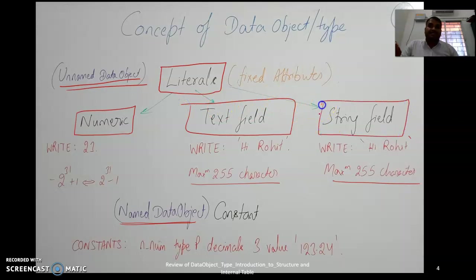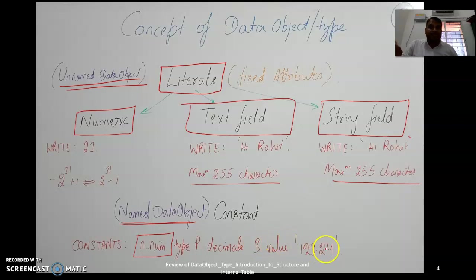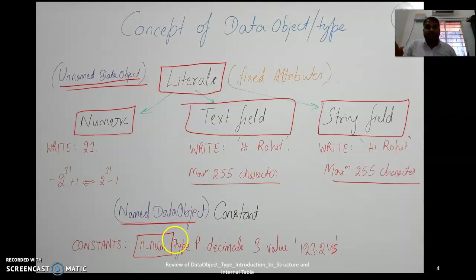If you have a constant, you need to define it explicitly. For example, a packed number with three-digit decimal like 123.245 — that value is stored in a variable called num. After the program ends or if we exit, the value is retained as defined. It is recommended to use a constant rather than a literal, so the value is always preserved.